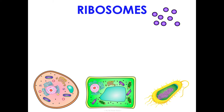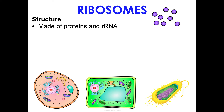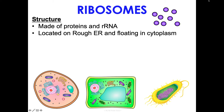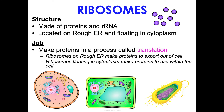Ribosomes are one of the most important structures and are found in all cells. They're made of proteins and rRNA, and are typically pictured as circles or dots. They can be found in two places: on the rough ER — making proteins that will be exported out of the cell — or floating in the cytoplasm, making proteins that will be used within the cell. Ribosomes make proteins through a process called translation, which we'll learn in detail in unit four.